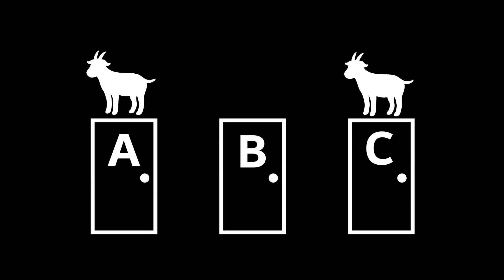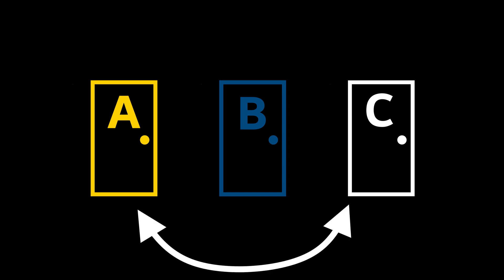The problem goes like this. You have three doors in front of you: A, B, and C. Behind two are goats, but one hides a car. You are asked to select a door. After that, the host will open a different door that has a goat behind it. They give you the opportunity to switch doors. The question is, should you switch?